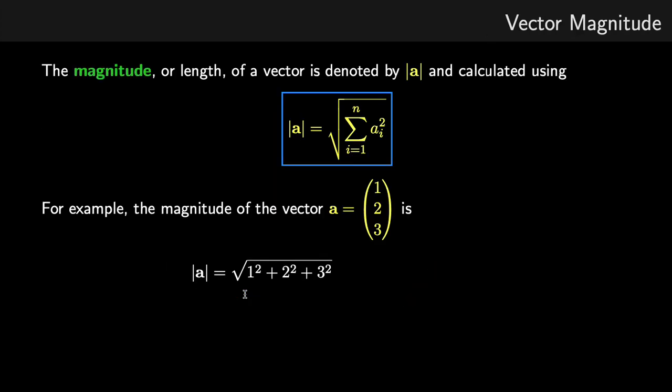So the vector magnitude, this is essentially the length of the vector, and we denote it by placing the vector between two vertical bars. And it's calculated using an extension of Pythagoras' theorem. So here we see we have each element of A is squared, add them all up, and then we square root them. So if we had two-dimensional space, this would essentially be Pythagoras' theorem.